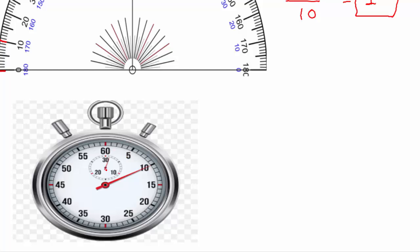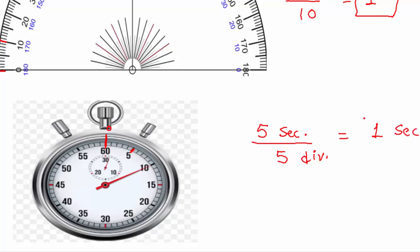Now the same way we can find the least count of this stopwatch. From 0 to 5 seconds, that interval is divided into 5 divisions, so 5 divided by 5 equals 1 second. So 1 second is the least count of this stopwatch.